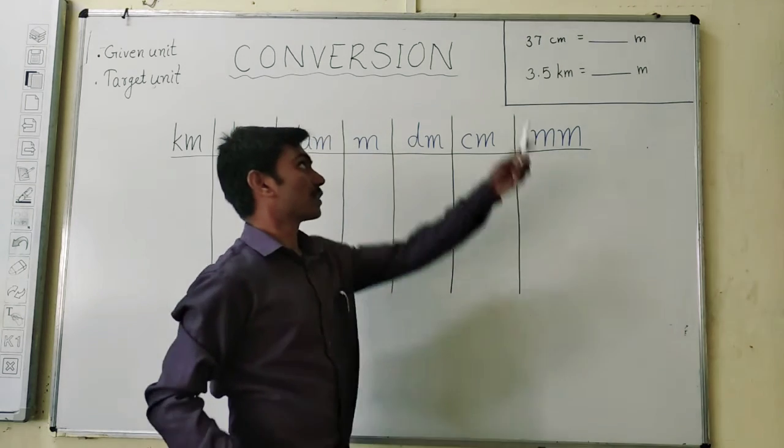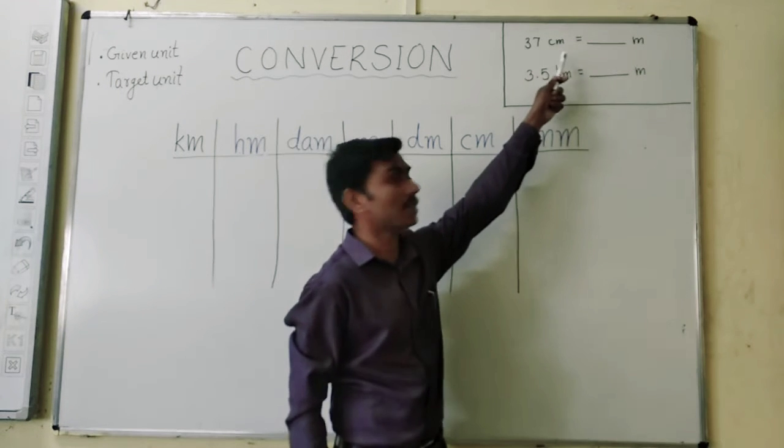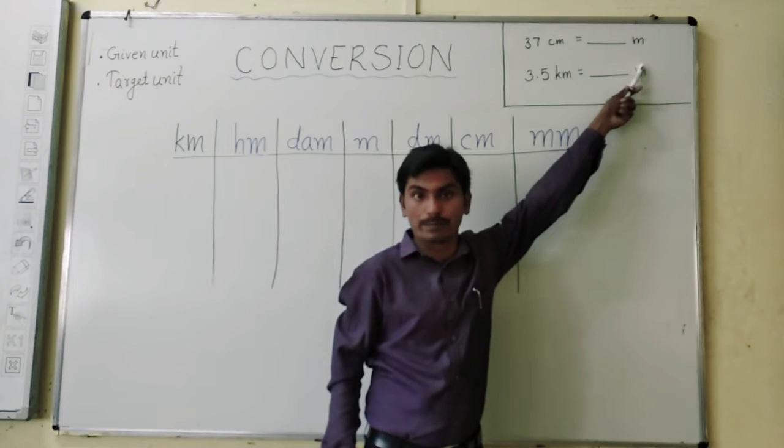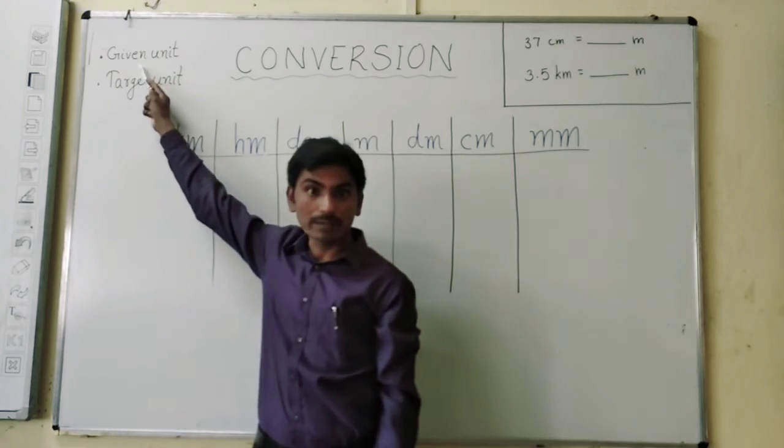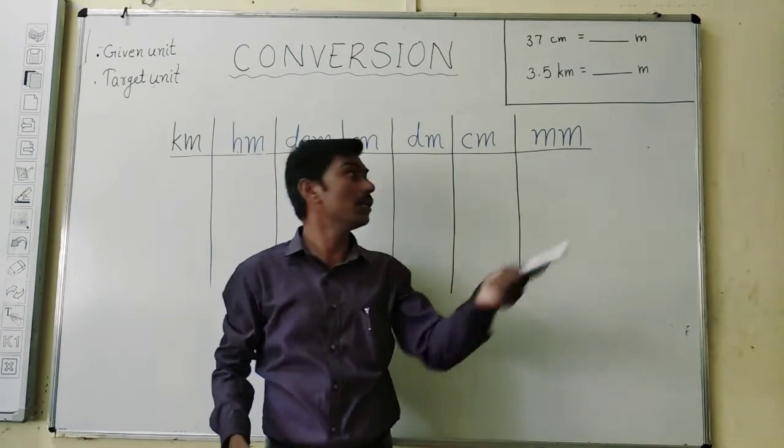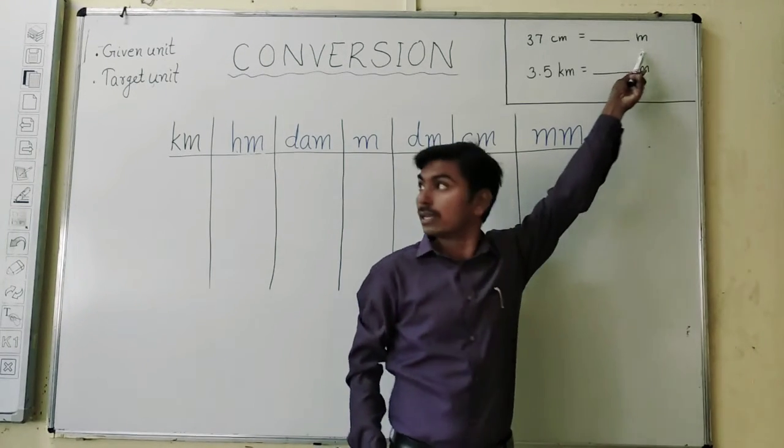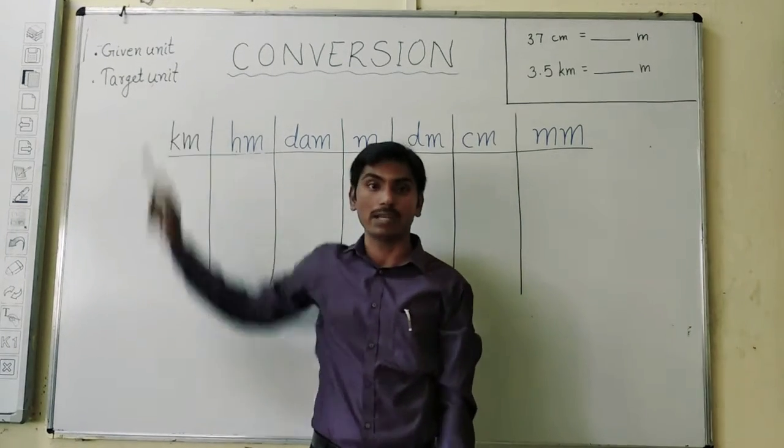Let us take an example. Suppose we have to convert 37 cm into meter. So this 37 cm is our given unit and meter will be our target unit.